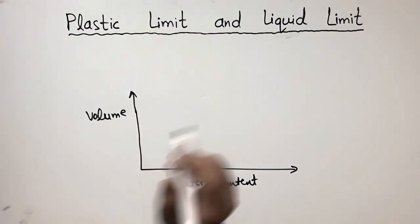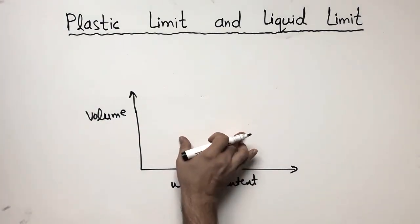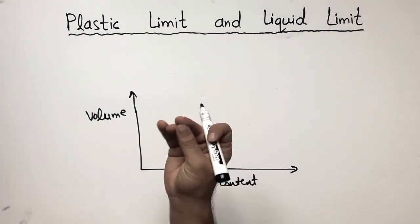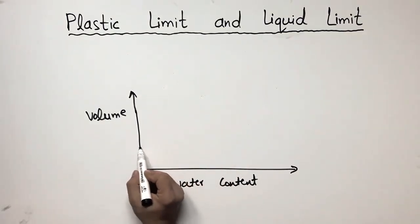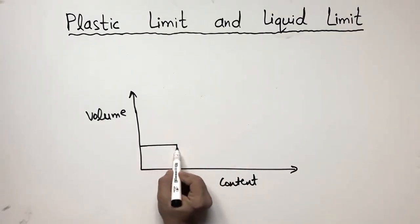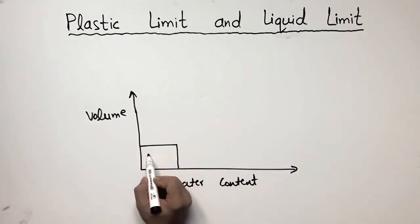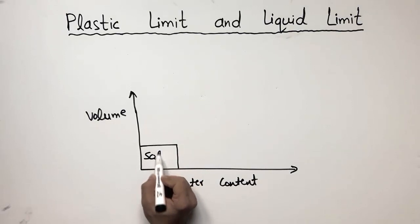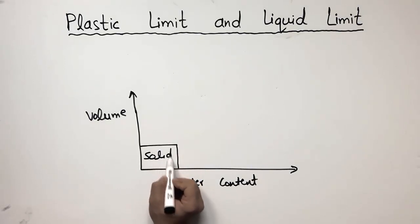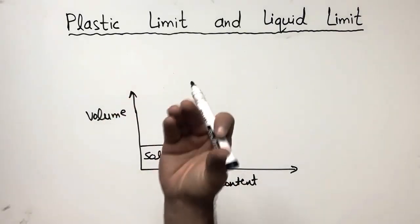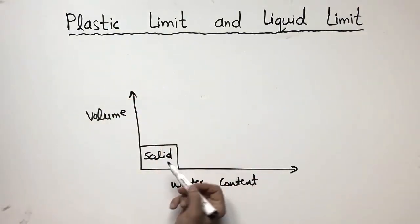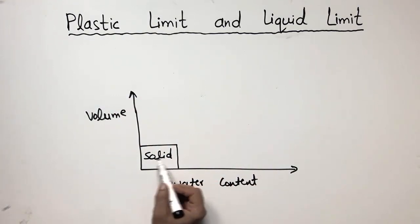There are different stages of the soil. When soil is in solid state, this is the first stage of the soil. When soil is in solid state, we don't put any water in the soil mass. The soil is without any water — we call it the solid state of the soil mass.